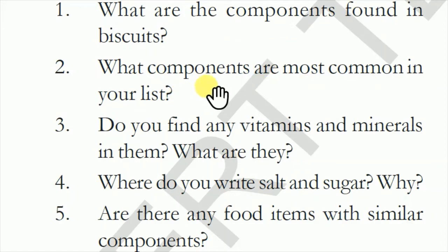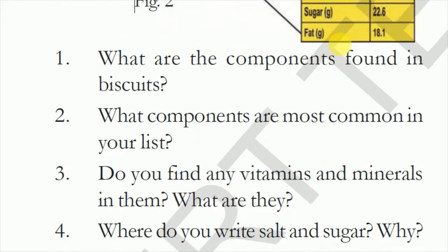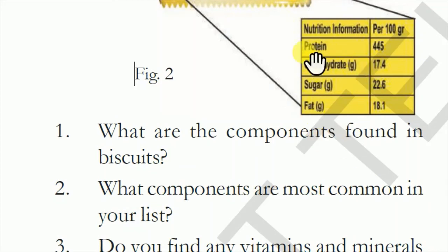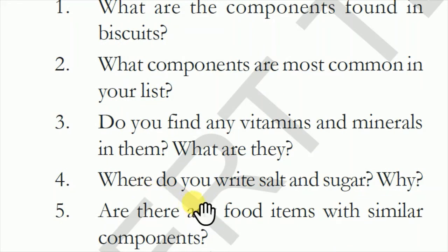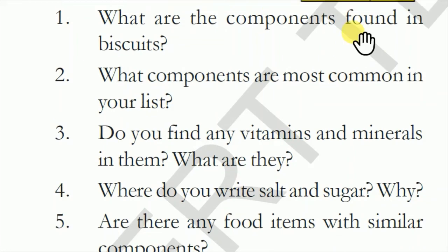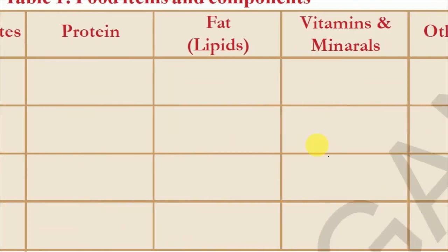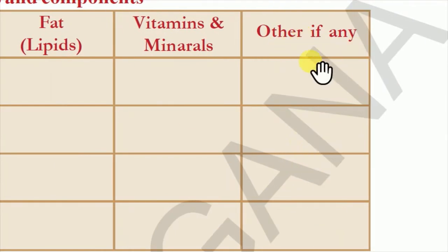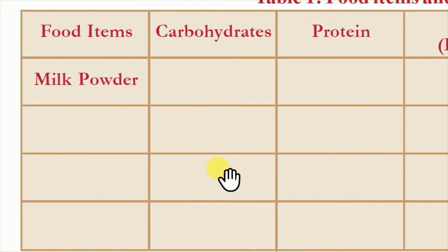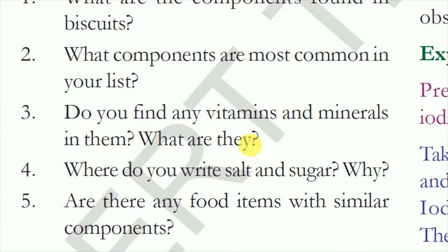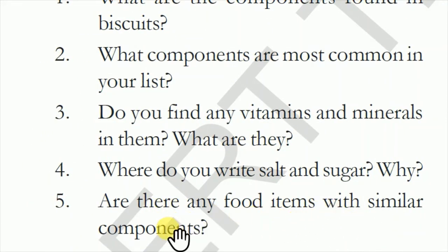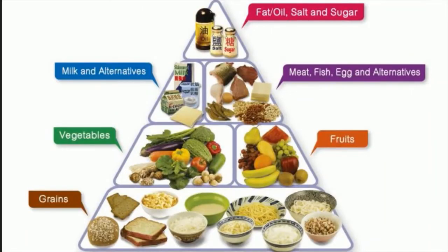Third question: do you find any vitamins and minerals in the items? Indicate which ones — for example, if vitamins are not mentioned but proteins are, write protein. Fourth question: where do you write salt and sugar? They go in the last column 'other if any.' Fifth question: are there any food items with similar components? For example, milk powder and curd packets will have more or less the same food items.